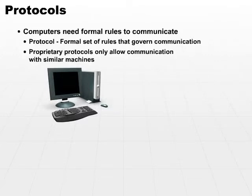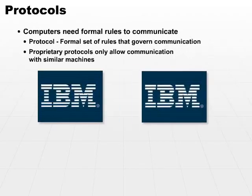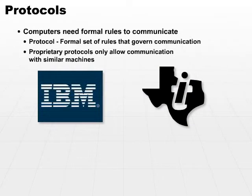Proprietary protocols are rule sets written to allow like machines to communicate. This is the way that network protocols originally started to develop. You would have an IBM machine that could only talk to another IBM machine because they only understood IBM rules and IBM languages. What the industry decided early on was that they needed a standard protocol suite to allow an IBM machine to talk to a Texas Instrument machine or some other type of hardware.